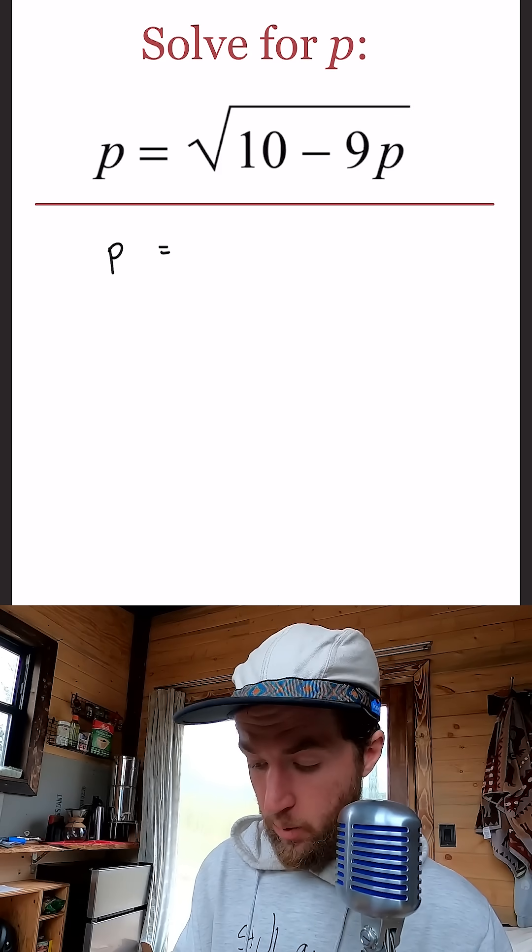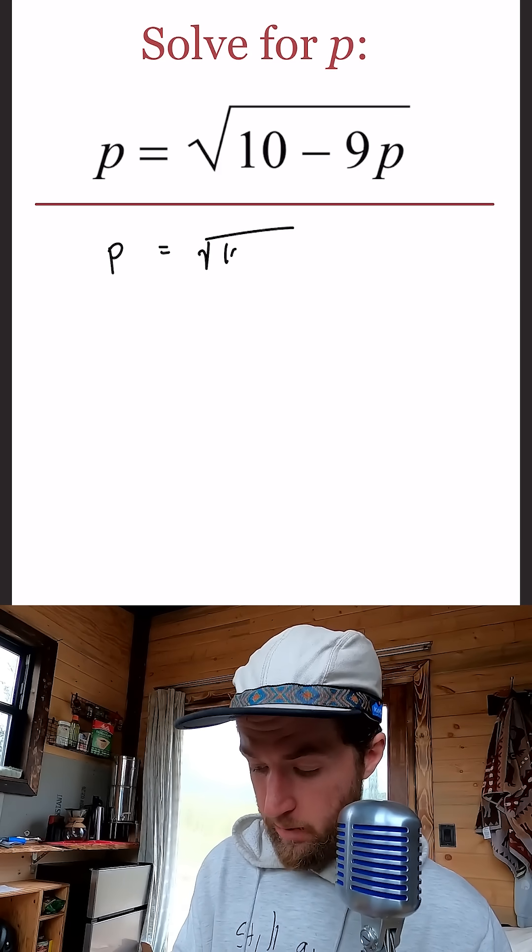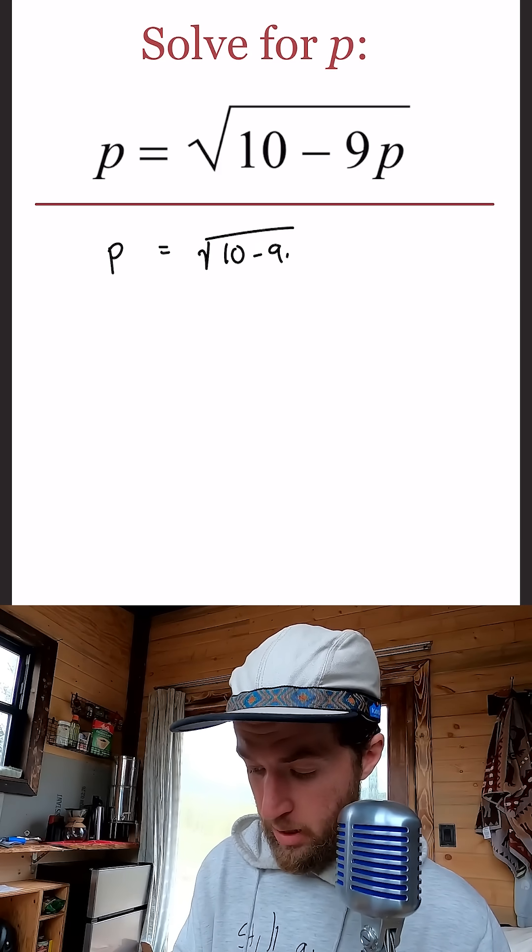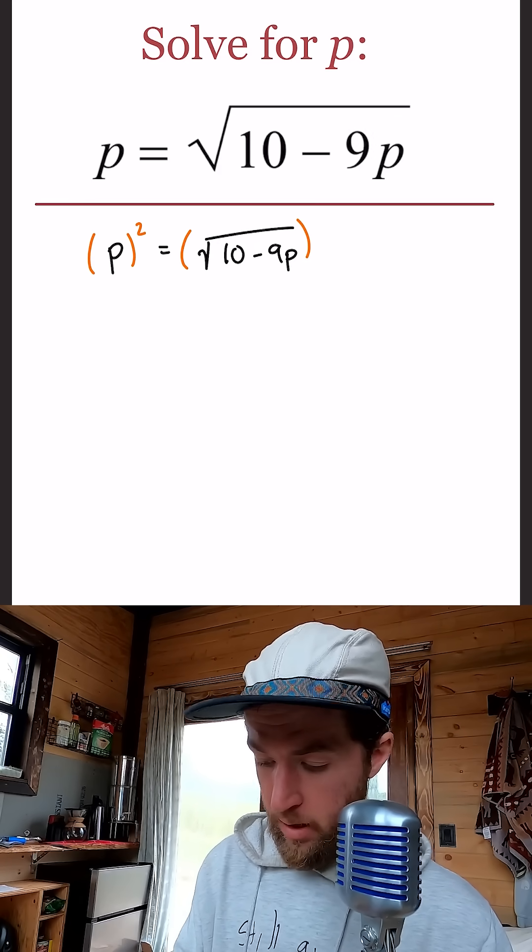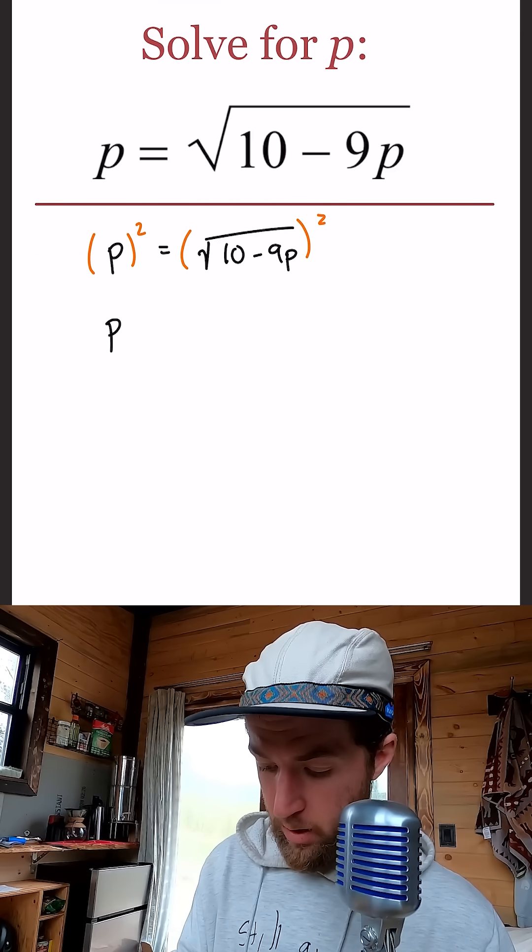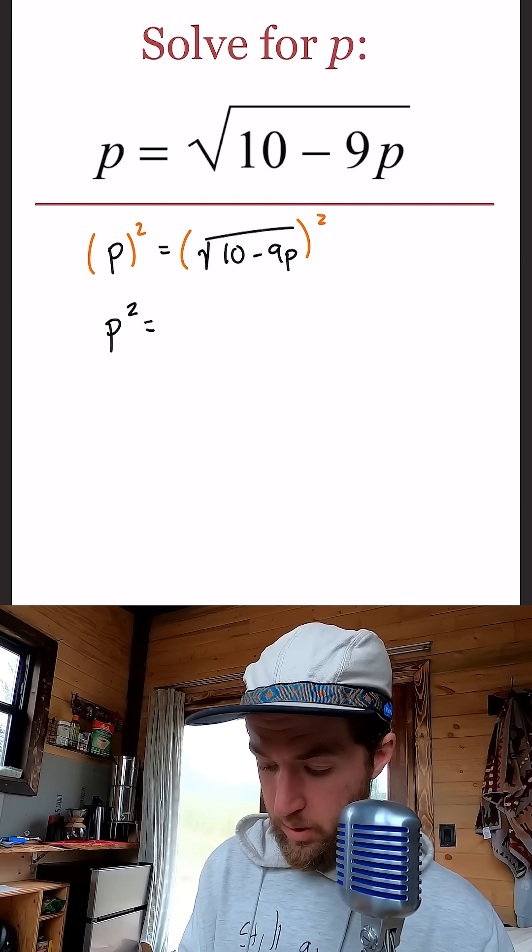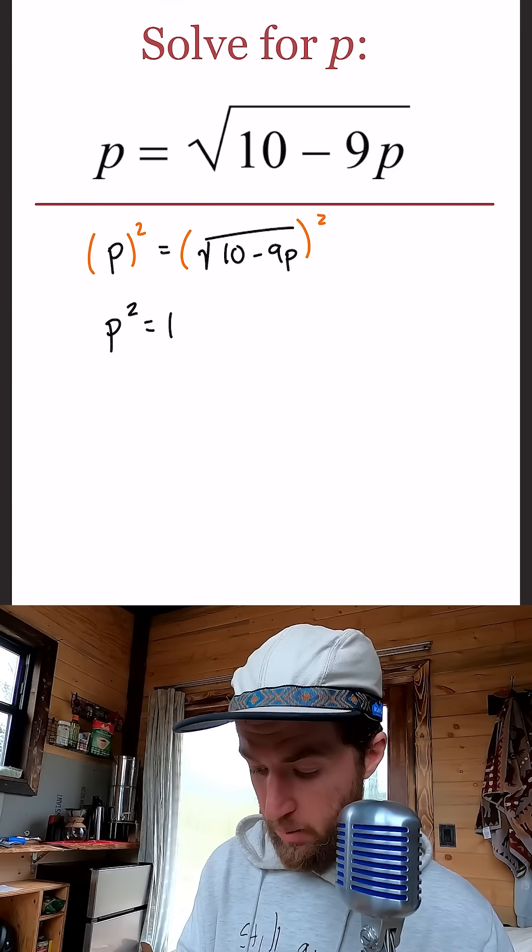So if we have P equals square root of 10 minus 9P, we want to get rid of that square root by squaring both sides. We can do just that. We'll get P squared equals what's on the inside of the square root, 10 minus 9P.